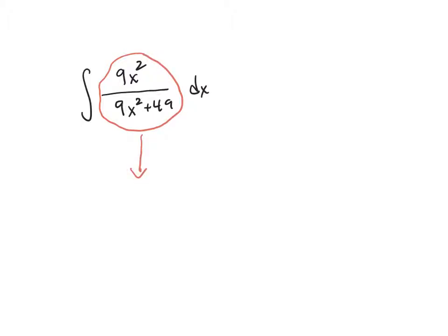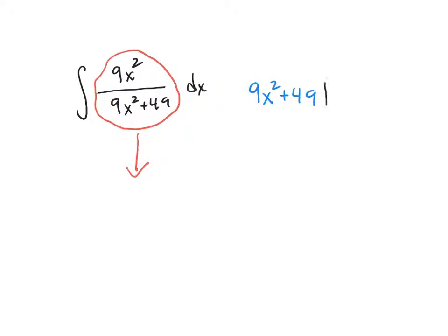To do that, we'll use long division, and I'm going to perform that over here on the side. The way you do long division is you write down the denominator out here, and then you use the old school elementary school division symbol, and you put your numerator underneath there.